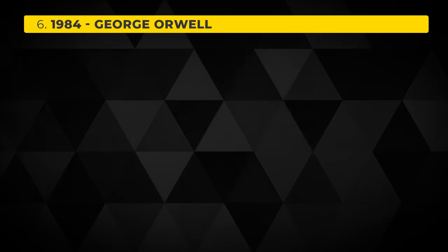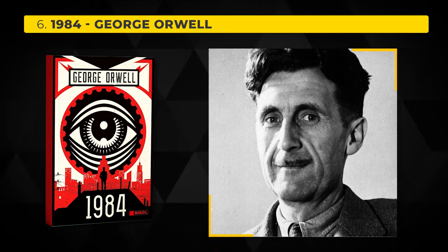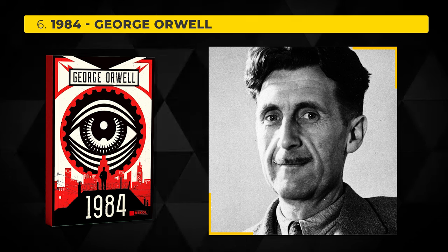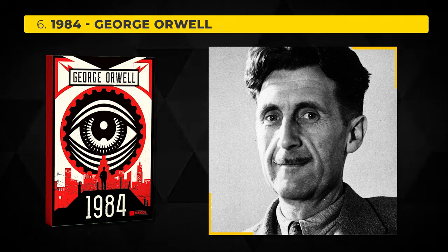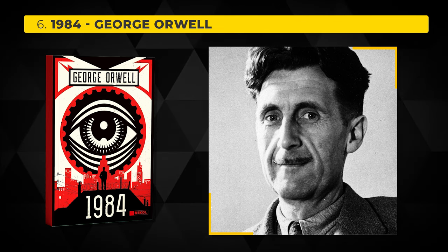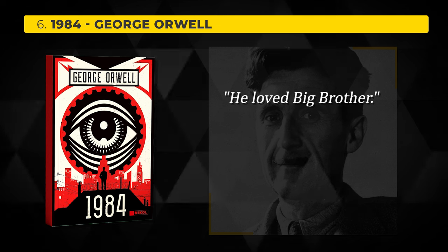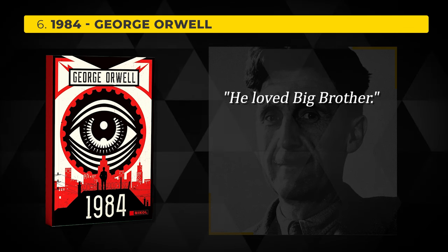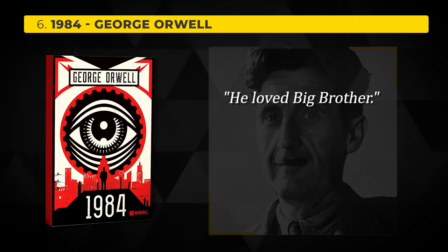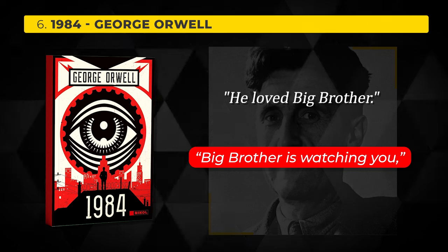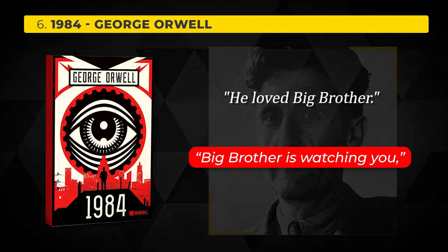The sixth closing line is from George Orwell's 1984, a dark and gripping novel that portrays a grim future where a totalitarian regime crushes personal freedom and independent thinking. It's a warning about the dangers of government control, constant surveillance, and the misrepresentation of reality. The closing line goes: 'He loved Big Brother.' Big Brother is the symbol of the oppressive party, representing its surveillance state and absolute authority. Through slogans like 'Big Brother is watching you,' the novel illustrates the party's power to control not only people's actions, but also their thoughts and loyalty.